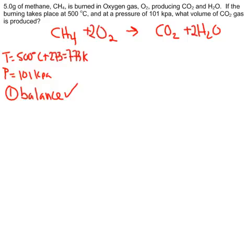Next step in all stoichiometry, whether it's gravimetric or volumetric, is to find the moles of something that you know about. The only thing we're given information on is 5 grams of methane, so we can figure out moles from that.